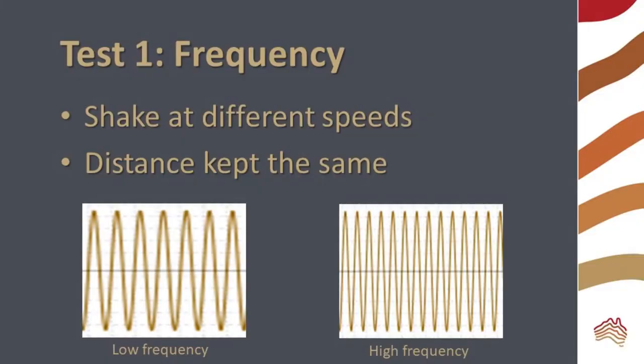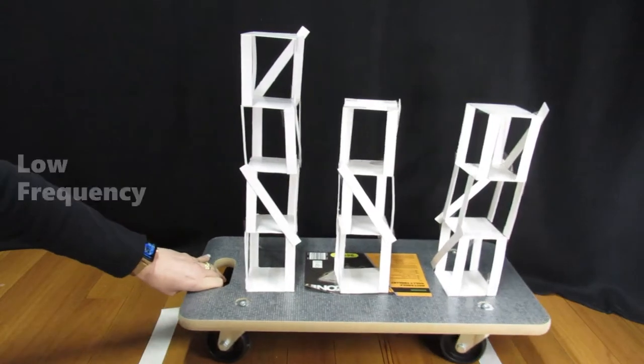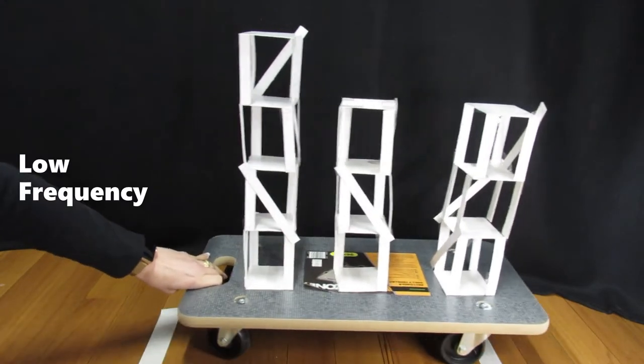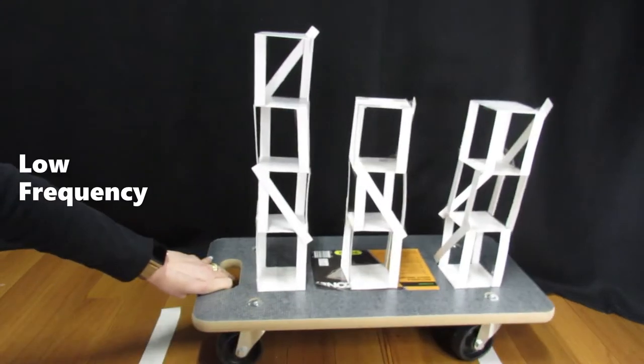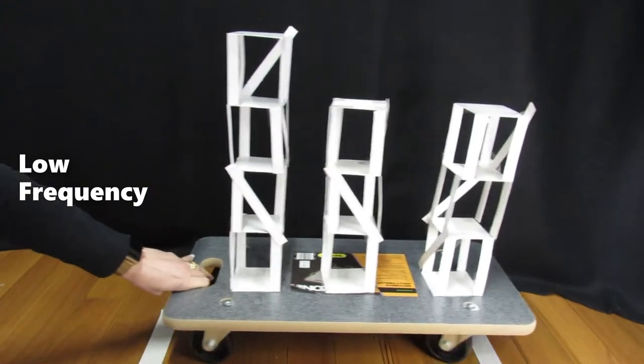In test one, we're moving the trolley the same distance along the floor and changing the frequency of movement. What happens when the trolley moves faster?